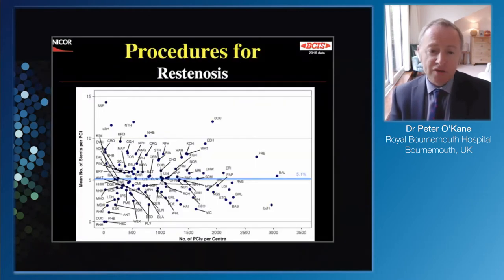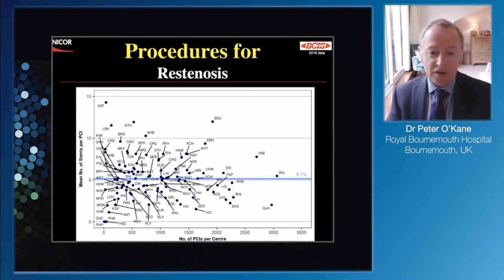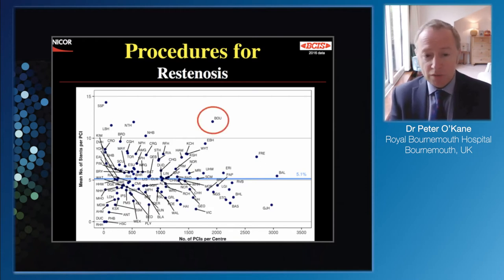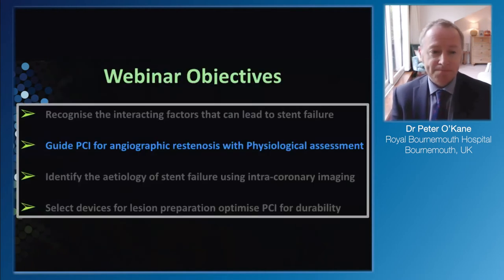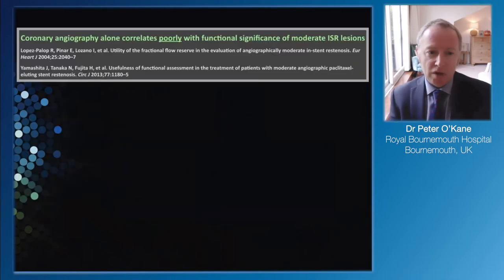When you look at restenosis across the UK, the incidence is around 5% on average, with clear variation from centre to centre. Bournemouth sees up to 10% restenosis, probably because we treat a lot of elderly patients.